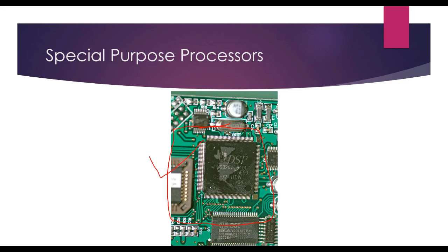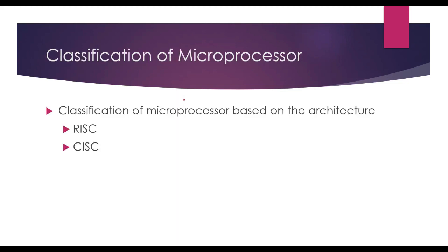Up to this point, we have discussed general purpose processor, microcontroller, special purpose processor, and the difference between microcontroller and microprocessor. Now, microprocessors are also classified based on architecture — that is RISC and CISC.